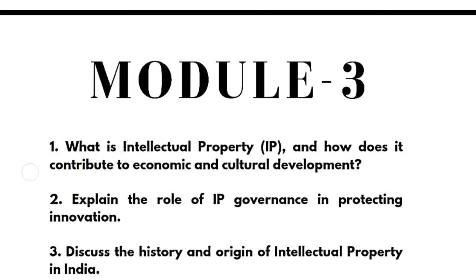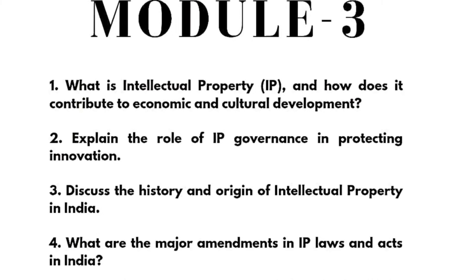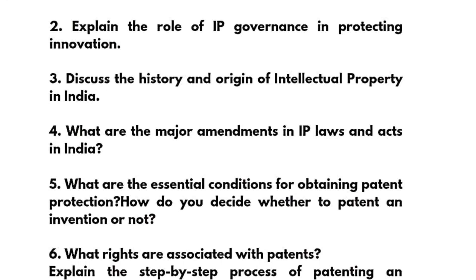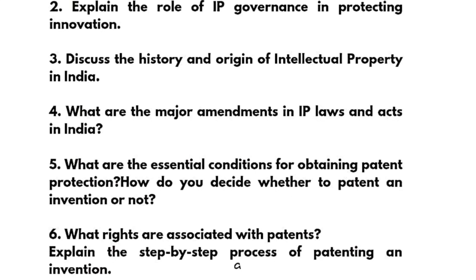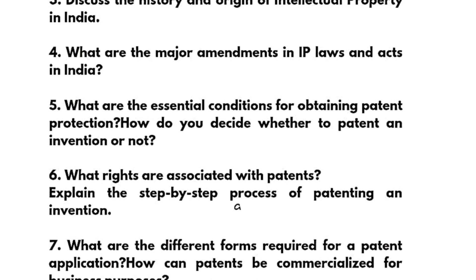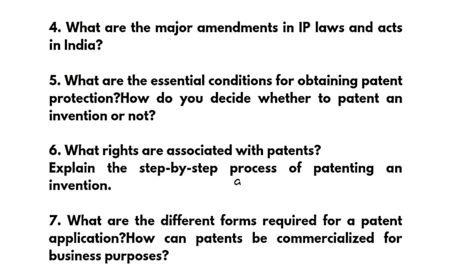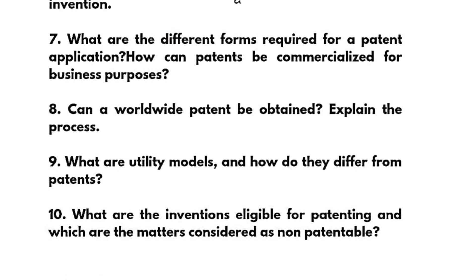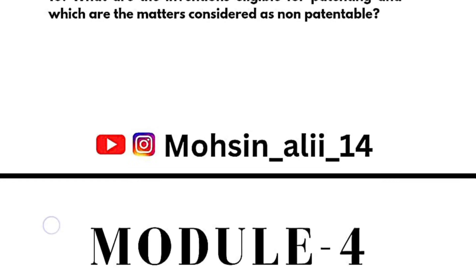Coming to Module 3, where the syllabus is very vast, I have taken some super important questions: what is intellectual property and how does it contribute to economic and cultural development; explain the role of IP governance in protecting innovation; discuss the history and origin of intellectual property in India; what are the major amendments in IP laws and acts in India; what are the essential conditions for obtaining patent protection; how do you decide whether to patent an invention or not; what rights are associated with patents; explain the step-by-step process of patenting an invention; what are the different forms required for a patent application; how can patents be commercialized for business purposes; can a worldwide patent be obtained — explain the process; what are utility models and how do they differ from patents; and what are the inventions eligible for patenting and which are considered non-patentable.